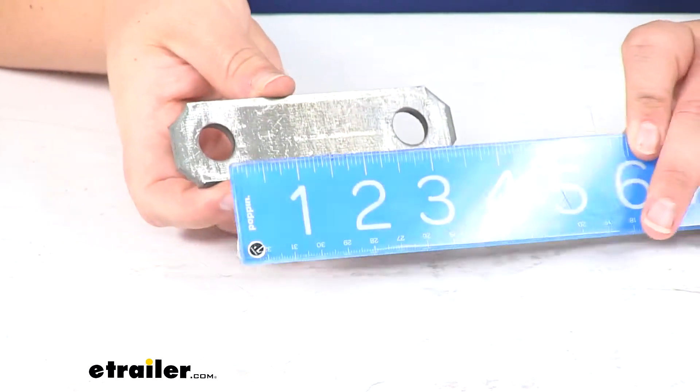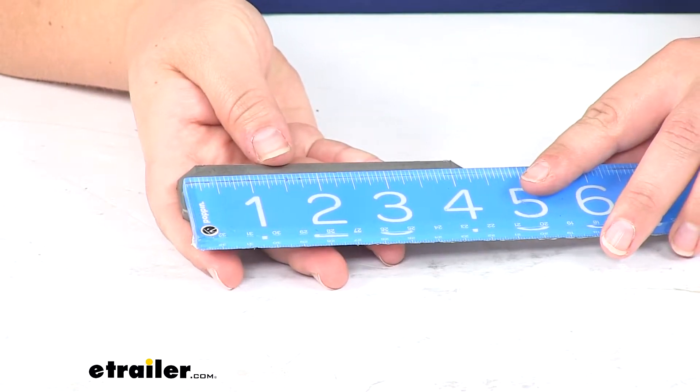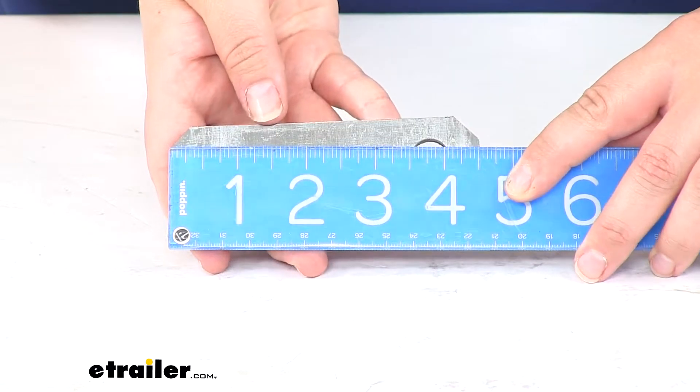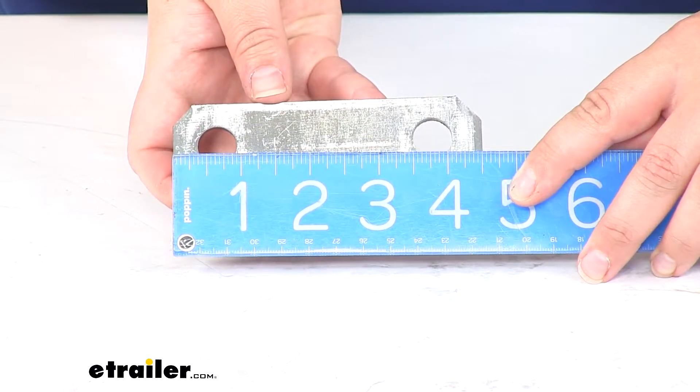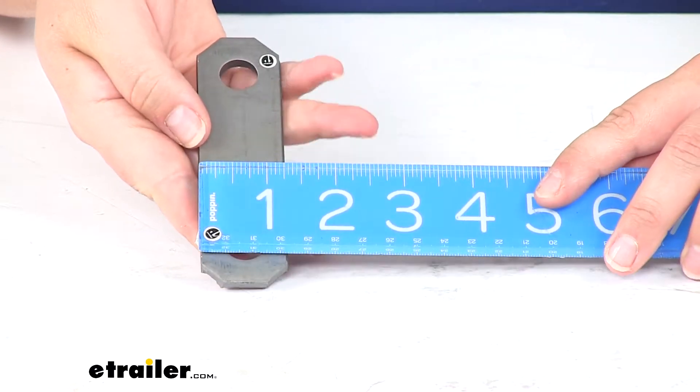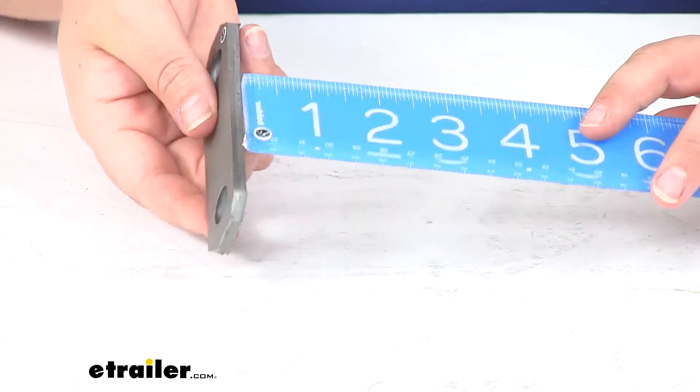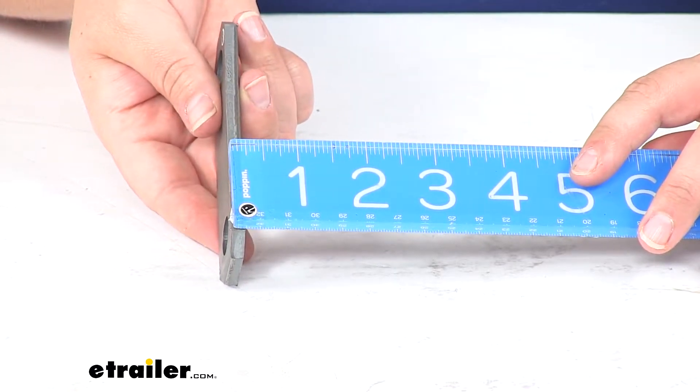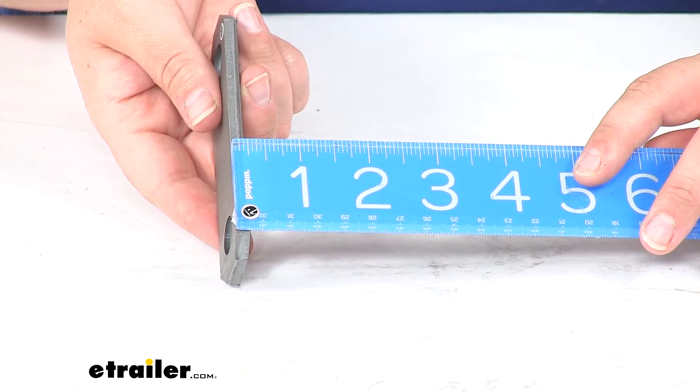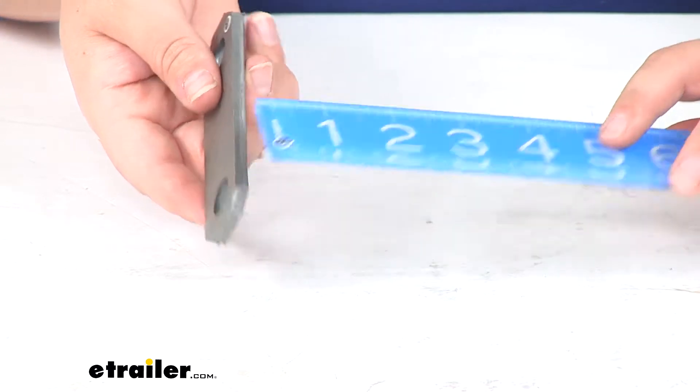The distance overall from end to end is about four and a half inches. The width is about one and a quarter, and then the thickness is just under a quarter of an inch, about seven thirty-seconds.